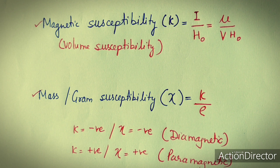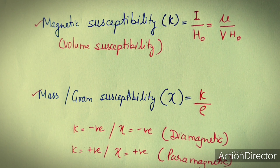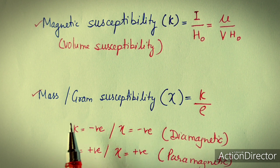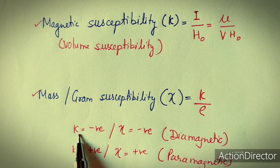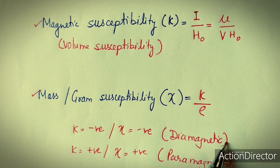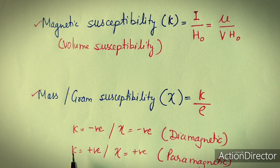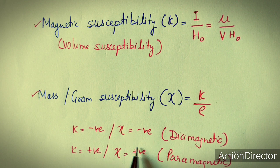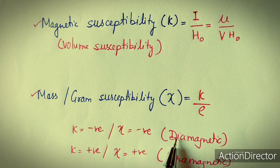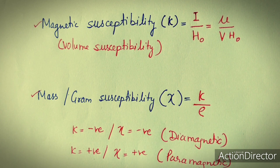The values of kappa or chi depict the magnetic behavior of any substance. If the value of kappa or chi is negative, the substance will be diamagnetic in nature. If the value is positive, then the substance will be paramagnetic in nature. So if we know the susceptibility value, we can determine the magnetic behavior of any substance.